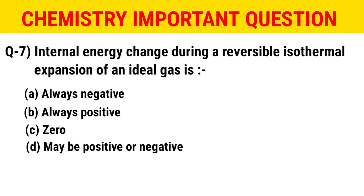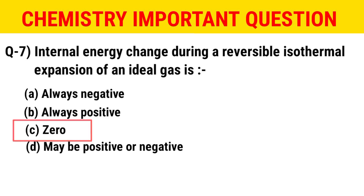The next question: what is the internal energy change during a reversible isothermal expansion of an ideal gas? The options are: always negative, always positive, zero, or may be positive or negative. The correct option is C — that is zero.